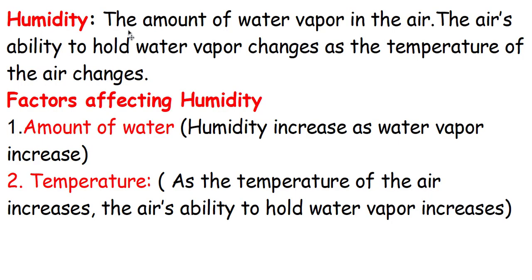Humidity is the amount of water vapor in the air — specifically, the air's ability to hold water vapor, which changes as temperature changes. Factors affecting humidity: amount of water — humidity increases as water vapor increases. Temperature — as the temperature of the air increases, the air's ability to hold water vapor also increases.